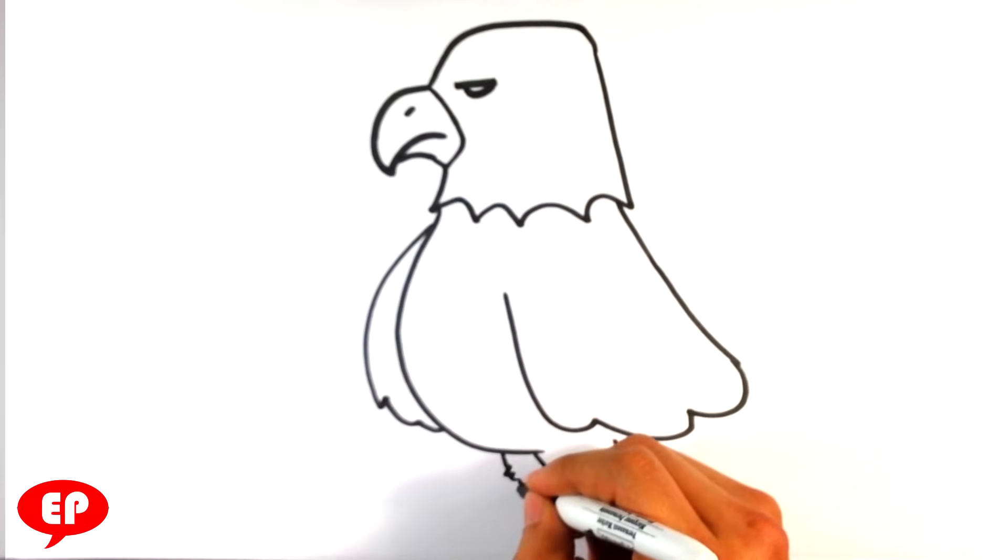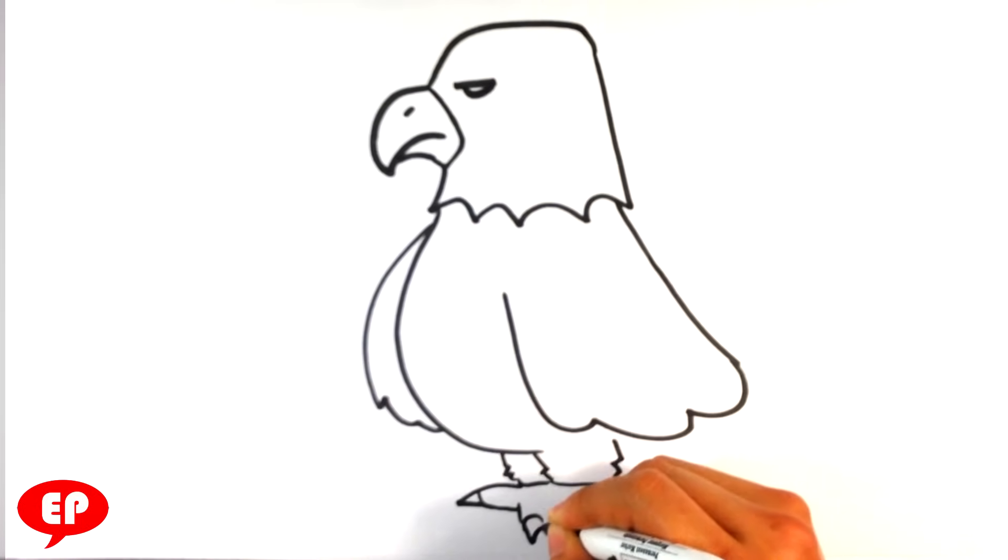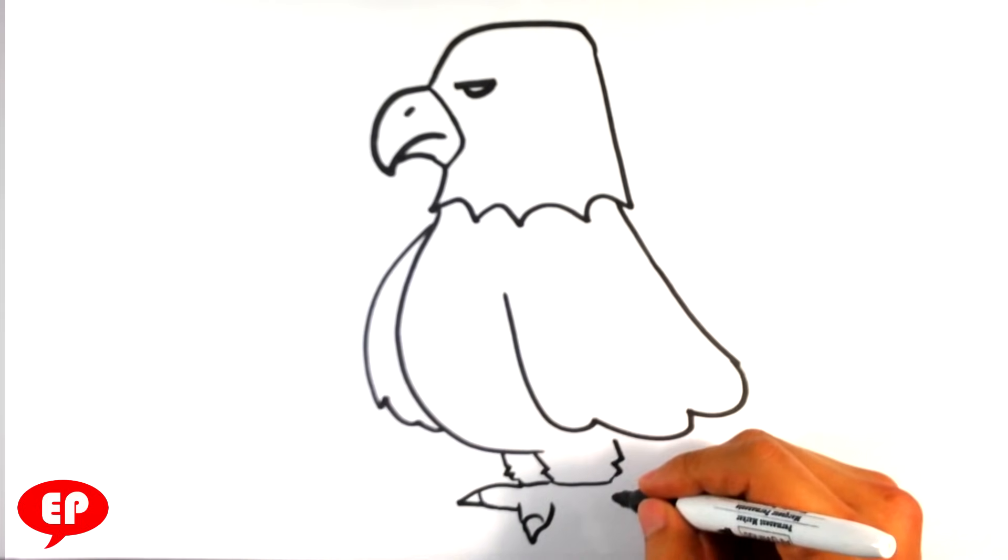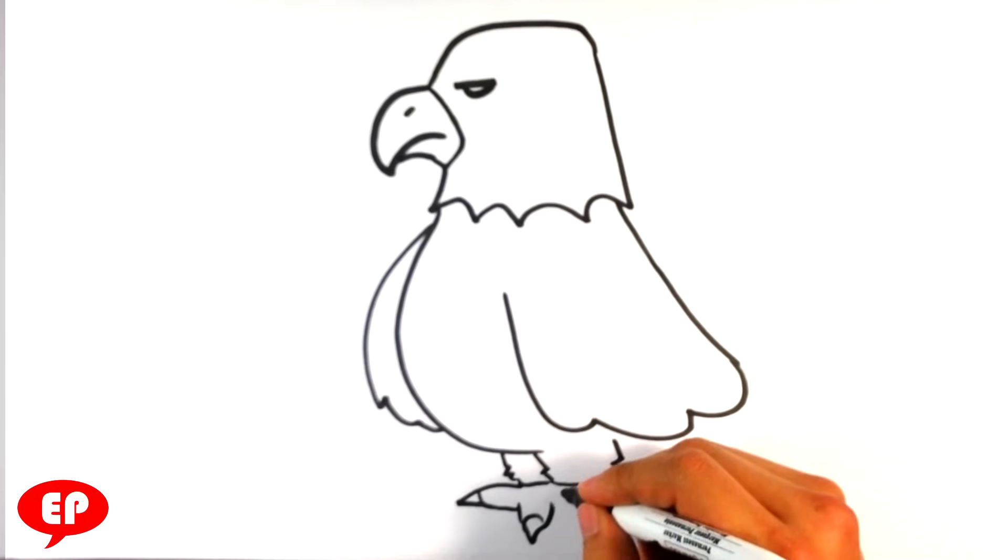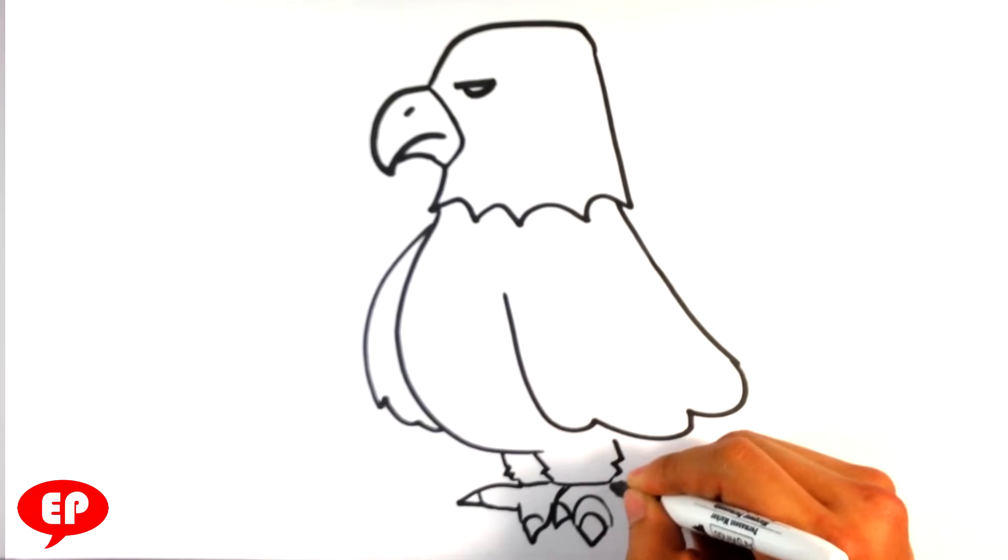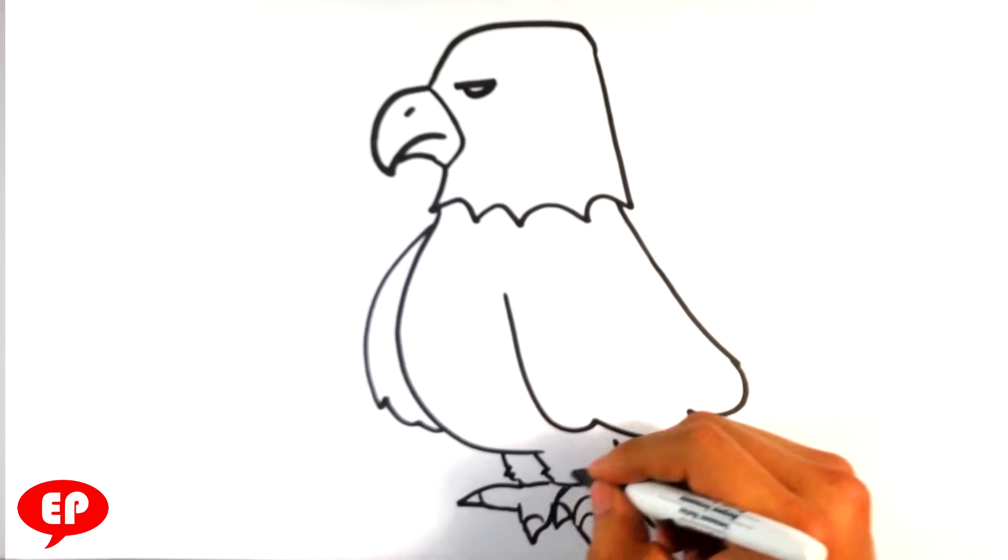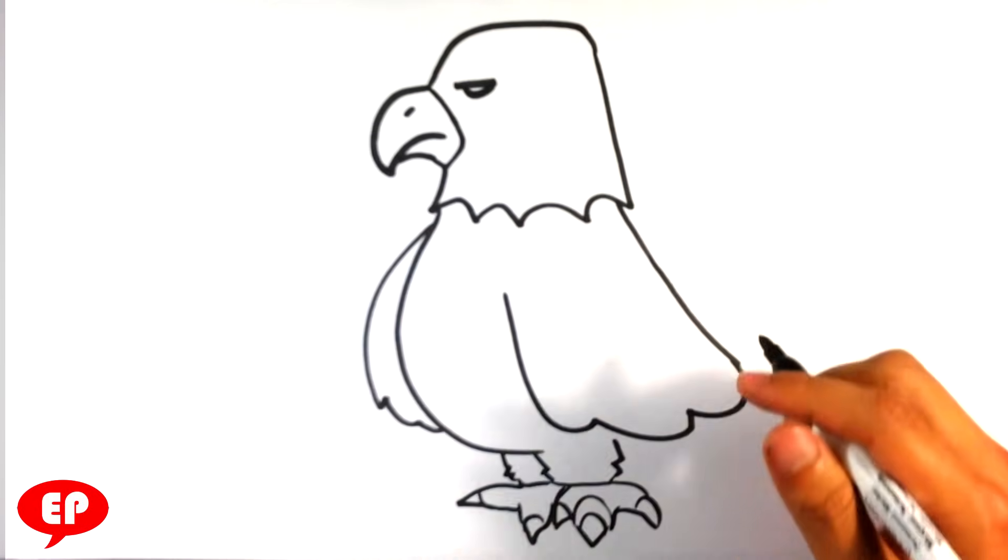Legs. Talon. It's essentially a series of triangles. It's got three toes, normally. I mean the cartoon version has three toes.